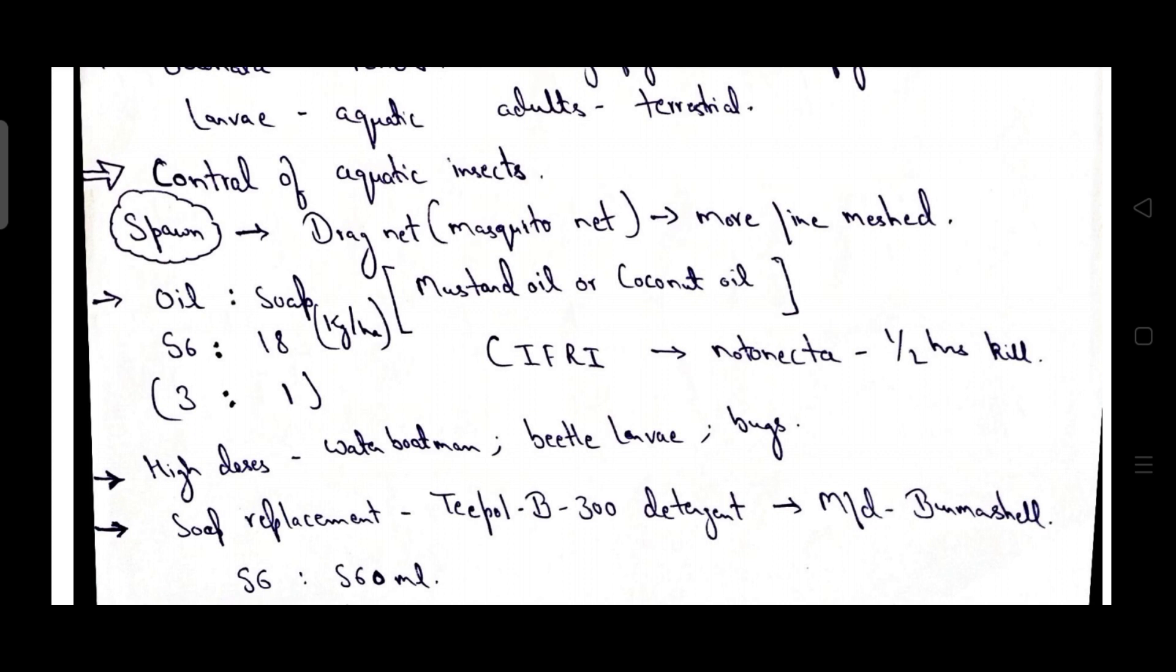Another technique is by using oil soap emulsion. Ratio is 56 to 18, very important point, and that is 3 to 1. Mustard oil or coconut oil is used. This technique was given by CIFRI and Notonecta can be killed by this technique in half an hour.